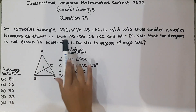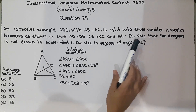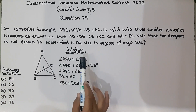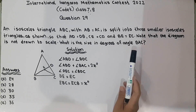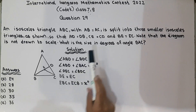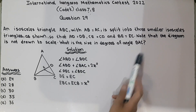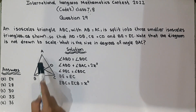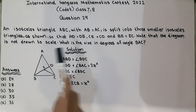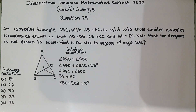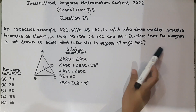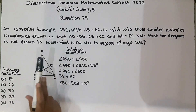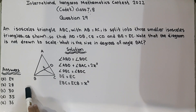An isosceles triangle ABC with AB equal to AC is split into three smaller isosceles triangles as shown, so that AD equals DB, CE equals CD, and BE equals EC. Note that the diagram is not drawn to scale. What is the size in degrees of angle BAC? We have to find angle BAC.